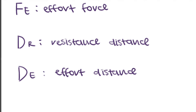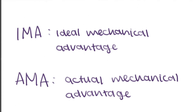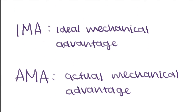Then we will talk about mechanical advantage. The mechanical advantage is a ratio between the amount of force input into the machine and the amount of force output. When you have a mechanical advantage greater than one, you input a small amount of force but receive a large output force. If it's less than one, you input a large force but receive only a small output force. If it equals one, however much force you put in is however much force you receive as output.